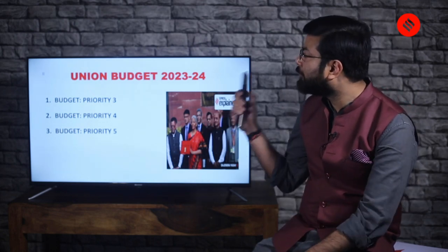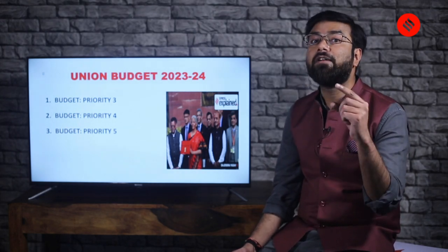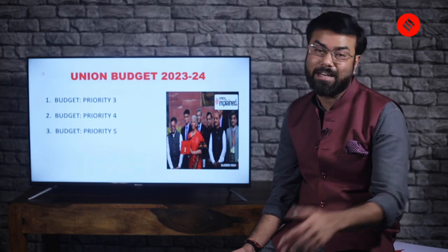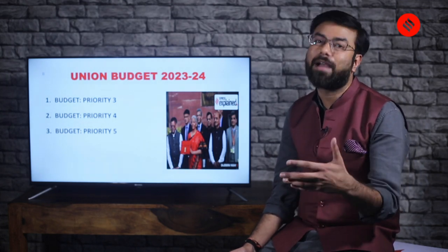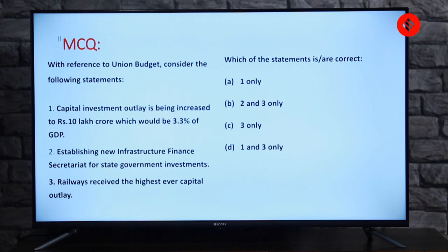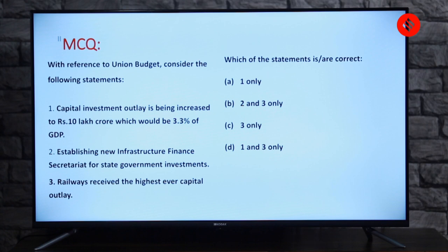In today's video, we are going to first talk about priority three. Remember, we have already done two priorities: priority one which talked about inclusiveness — agriculture, health, and skills and development — and the second priority which talked about last mile development. Now we are going to talk about priority three. But before that, let me take you to a question related to priority three. I want you all to try to answer it — be brave and courageous and make an attempt.